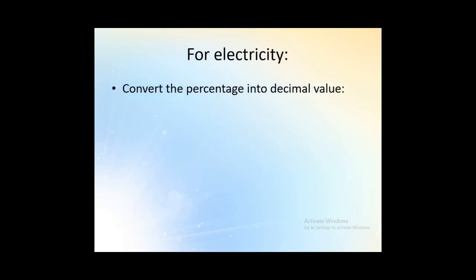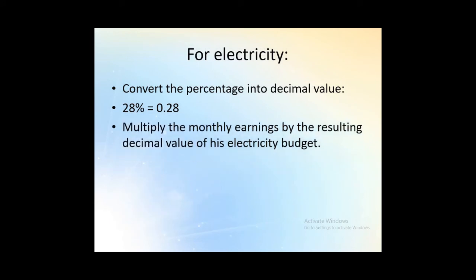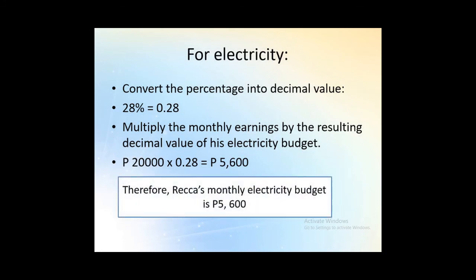For electricity, convert the percentage into decimal value. So 28% is equal to 0.28. Multiply the monthly earnings by the resulting decimal value of his electricity budget. So 20,000 pesos multiplied by 0.28, that is 5,600 pesos. Therefore, RECA's monthly electricity budget is 5,600 pesos.